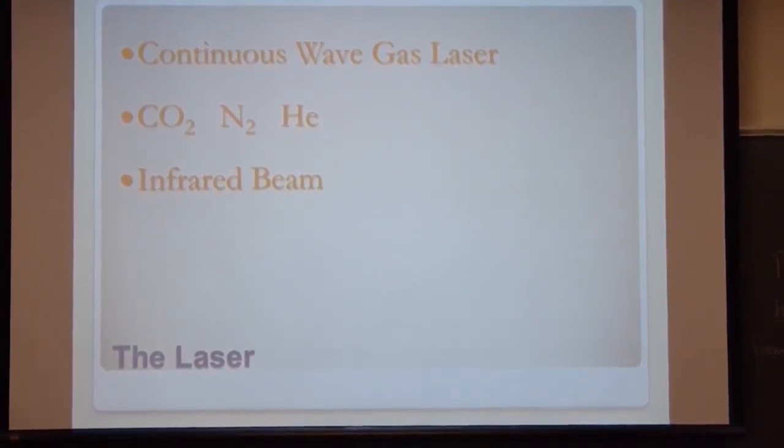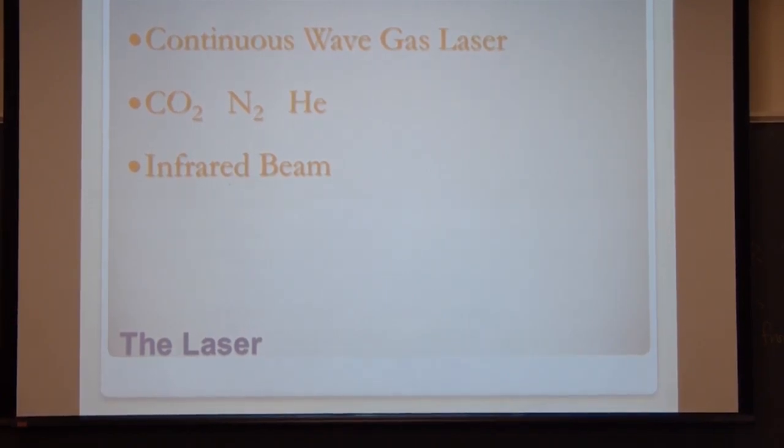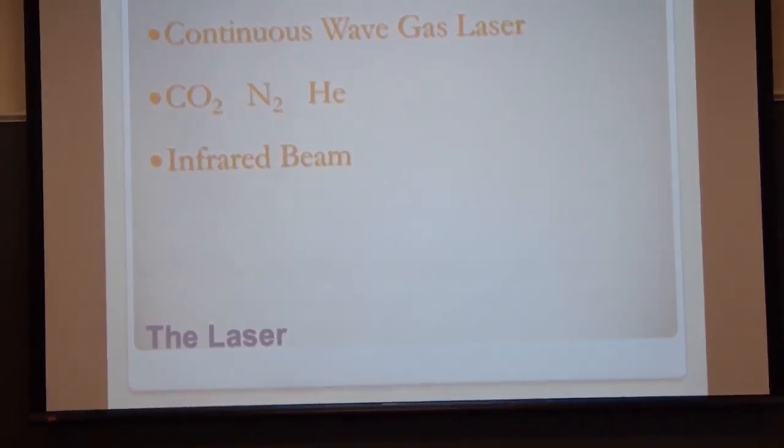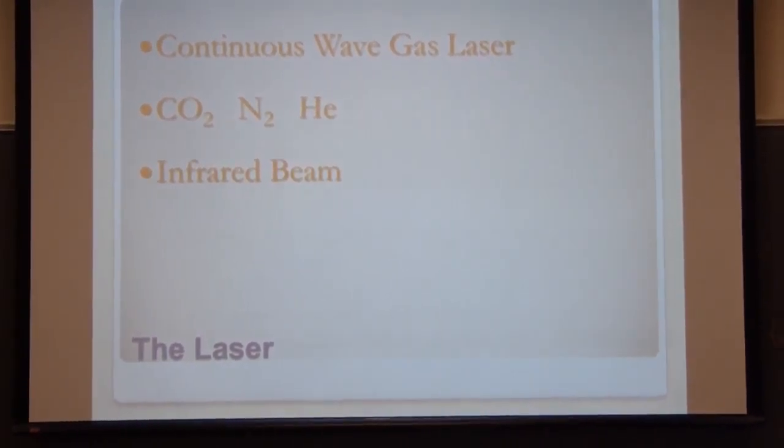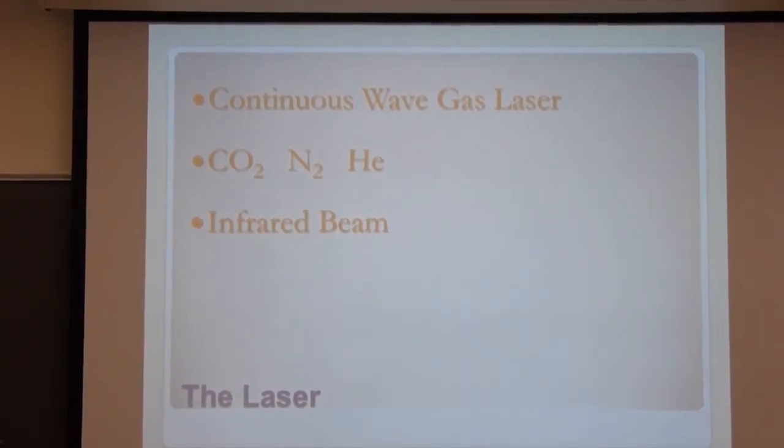It uses a mixture of carbon dioxide, nitrogen, and helium, and that gives us an infrared beam. It lases at 10.6 microns, which, just to give you sort of an idea, we end up with like 300 to 400 degrees Celsius peak temperatures with that.